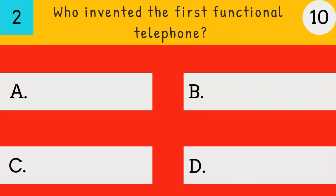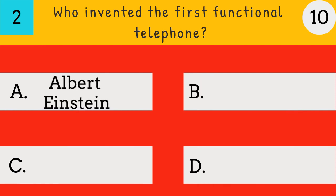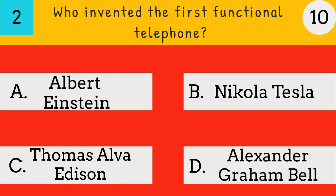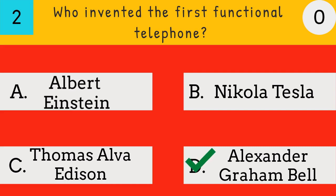Who invented the first functional telephone? Albert Einstein, Nikola Tesla, Thomas Alva Edison, Alexander Graham Bell. Answer: Alexander Graham Bell invented the first functional telephone.